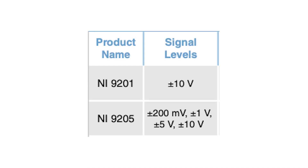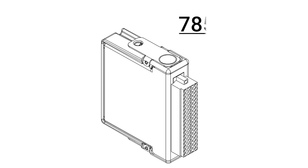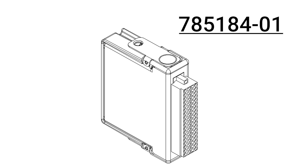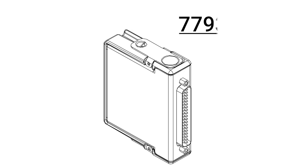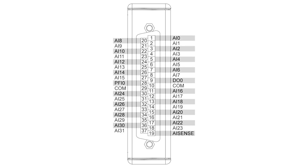There are four programmable input ranges for each channel. The difference between the NI9205 part numbers is that part number 785184-01 has spring terminal connectors, is a 36-position connector, and is not conformal coded. Part number 779357-01 has D-sub front connectors with 37 pins and is also not conformal coded.